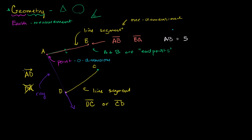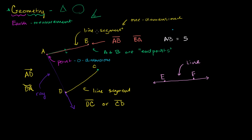Now the last idea you might be thinking about is: what if I could keep going in both directions? So let's say I have point E and point F right over here, and an object that goes through both E and F but just keeps going in both directions. This — in geometry terms — is what we call a line. A line never ends; you can keep going in either direction. A line segment does end — it has endpoints; a line does not. And a line segment can sometimes be called just a segment. You would specify line EF with arrows on both ends, just like that.